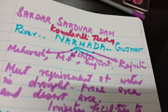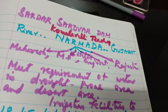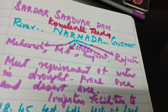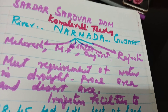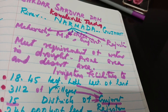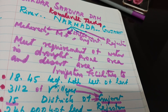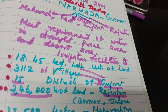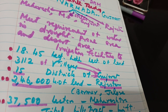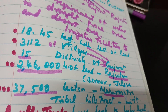Regarding the Sardar Sarovar Dam: it is constructed on the River Narmada in Gujarat, but covers four states — Maharashtra, Madhya Pradesh, Gujarat, and Rajasthan. It is meant to meet the water requirements of drought-prone and desert areas, providing irrigation facilities to 18.45 lakh hectares of land covering 3,112 villages and 15 districts of Gujarat.